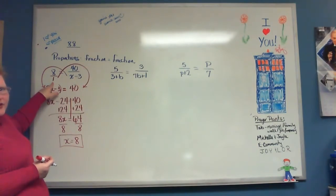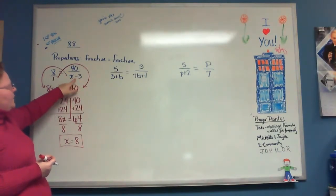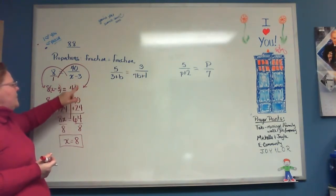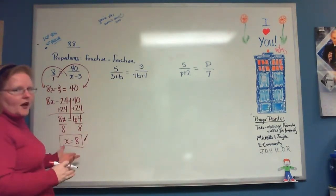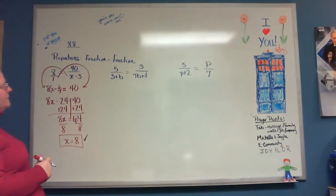So I plug an 8 in up here, that's fine because it doesn't do anything. There is no x there. If I plug an 8 in for x here, 8 minus 3 gives me a 5, we can have a 5 on the bottom of a fraction. We can't have a 0 on the bottom of a fraction. So that means this is a good answer. It doesn't mean that it's right, it just means that it's not wrong.